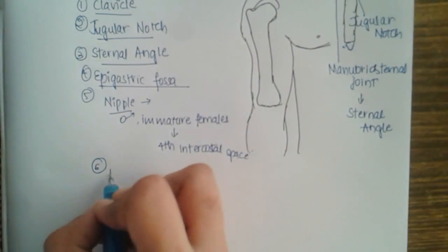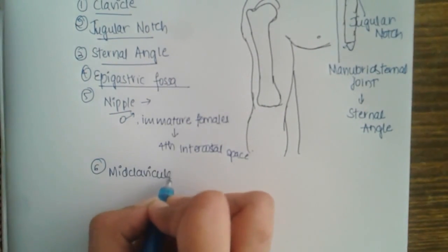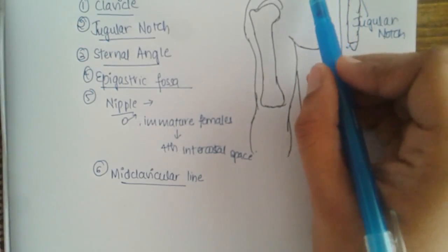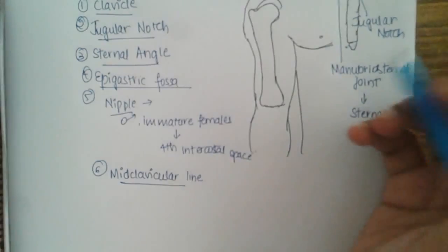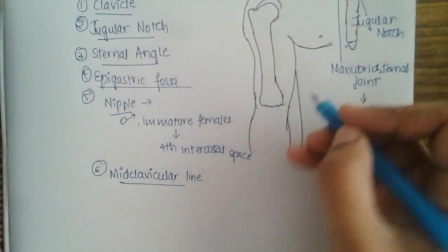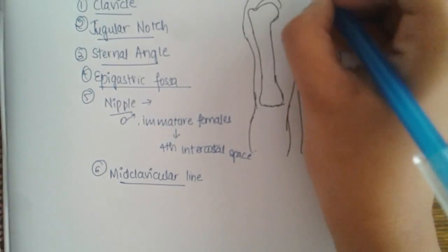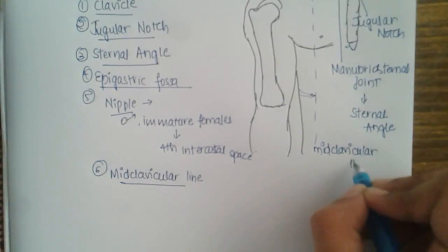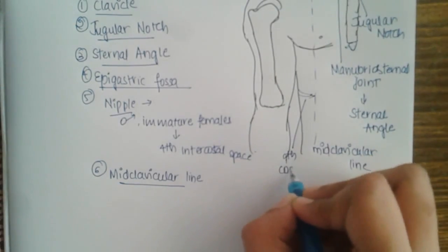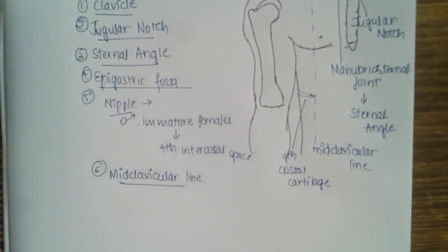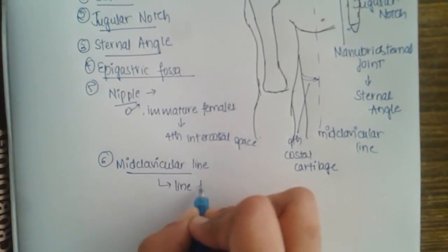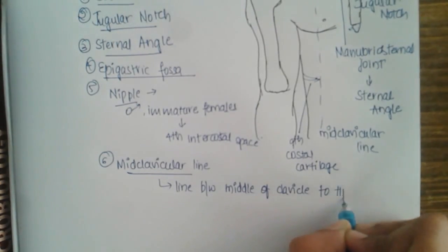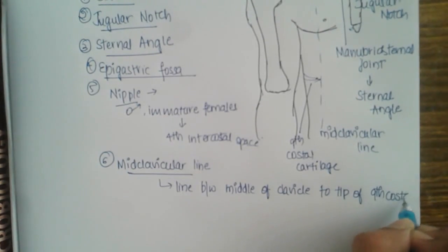The sixth landmark is the mid-clavicular line. This is an imaginary line drawn from the middle of the clavicle down to the tip of the ninth costal cartilage. You can feel your ninth costal cartilage quite easily.